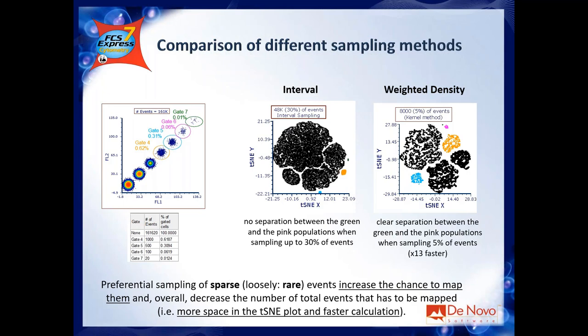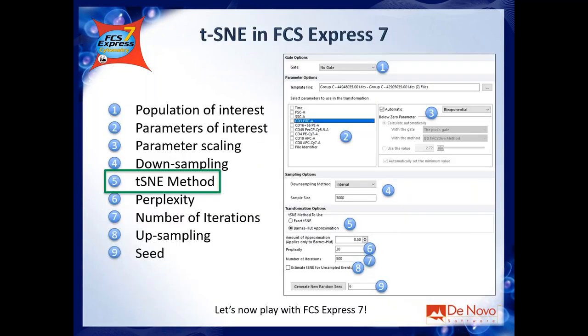If you have more questions on density-based downsampling, you can find detailed mathematical information on our website and in the FCS Express 7 manual, or just send us an email.